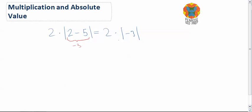The absolute value of negative 3 is 3. And so we are left with 2 times 3 which is 6. Now give this problem a try.